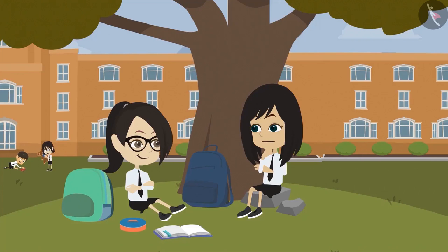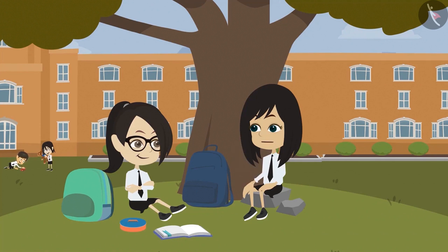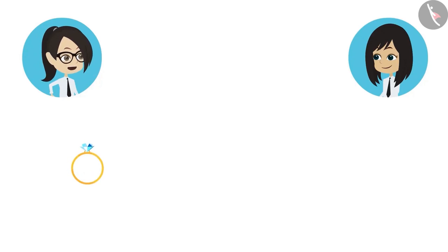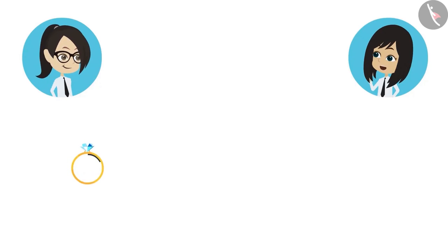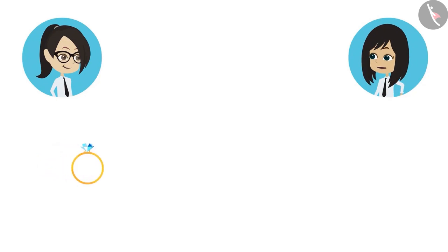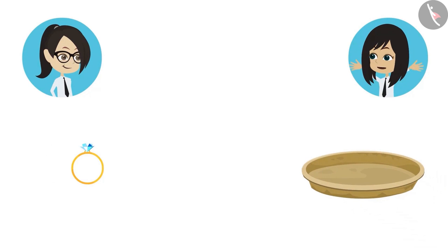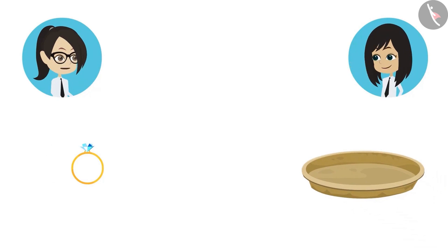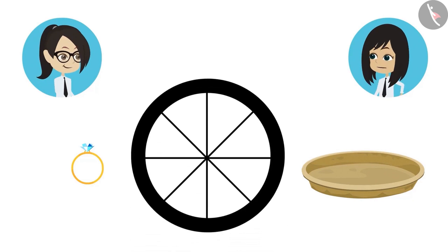Now I understand. What other objects can we use to make a round figure? A ring is also round, but it will make a very small round figure. To make a bigger round figure, we can use a plate. For an even bigger round shape, we can use the tyre of a cycle.